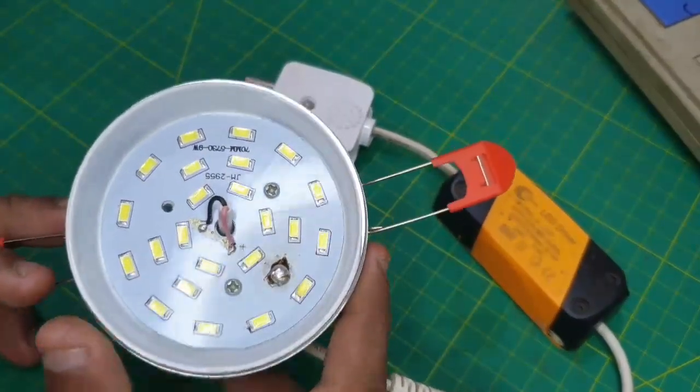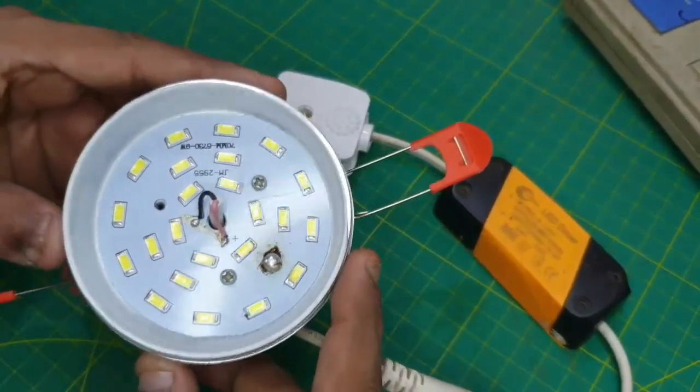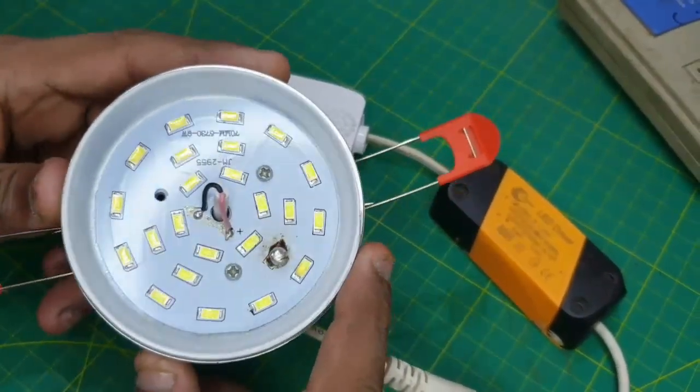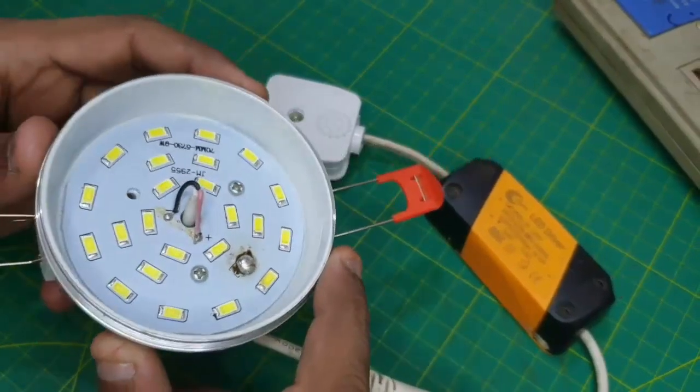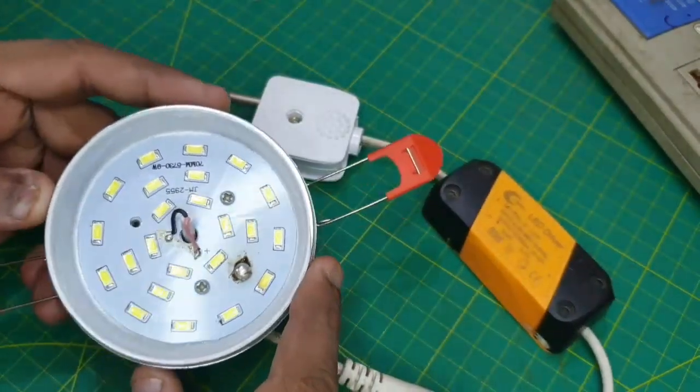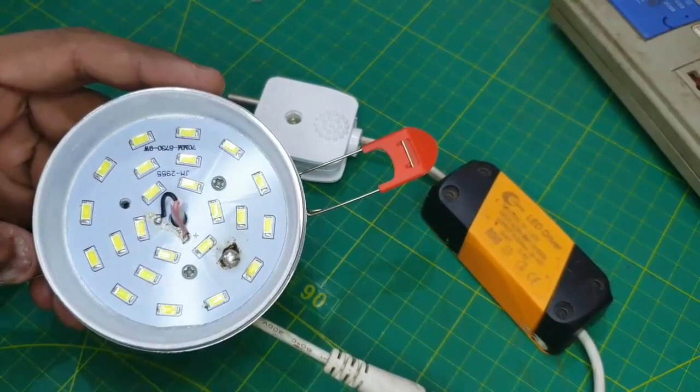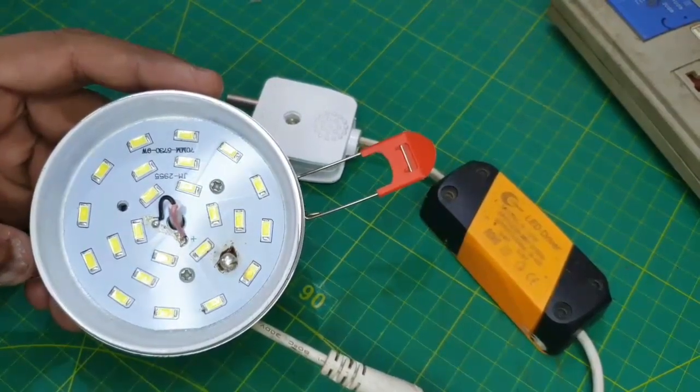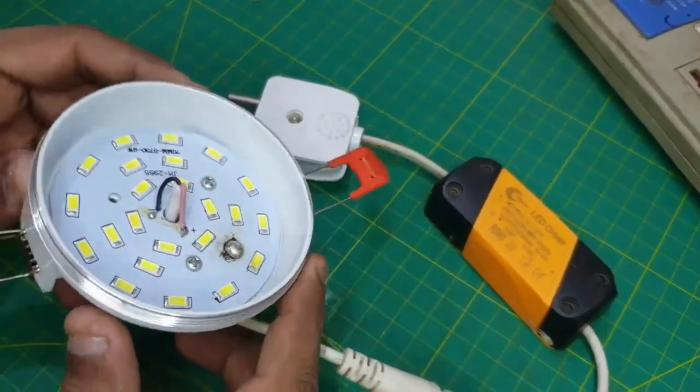It's a very easy method. If too many LEDs are damaged, you'll understand that it can't be repaired. I'll tell you how to identify which LED is damaged and what the signs are.